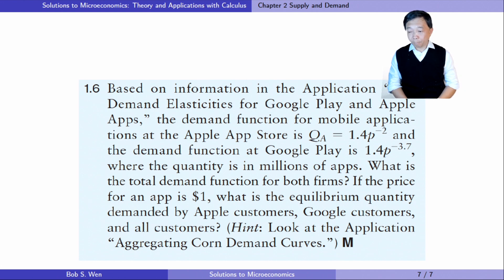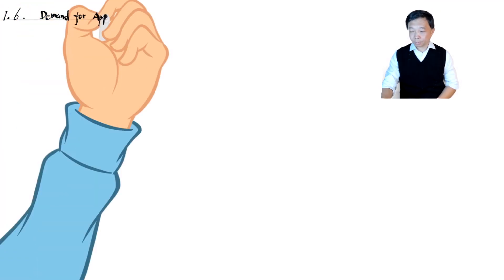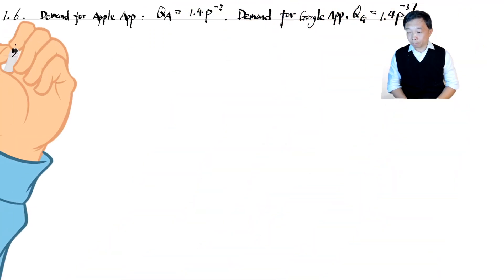Let's do the last exercise for part one of chapter two. Based on information in the application, the demand elasticities for Google Play and Apple apps, the demand function for mobile applications at the Apple app store is QA equals 1.4 times P to the power minus 2, and the demand function at Google Play is 1.4 times P to the power minus 3.7, where the quantity is in millions of apps. What is the total demand function for both firms? If the price for an app is one dollar, what is the equilibrium quantity demanded by Apple customers, Google customers and all customers? The total demand is the horizontal sum of the two individual demands.